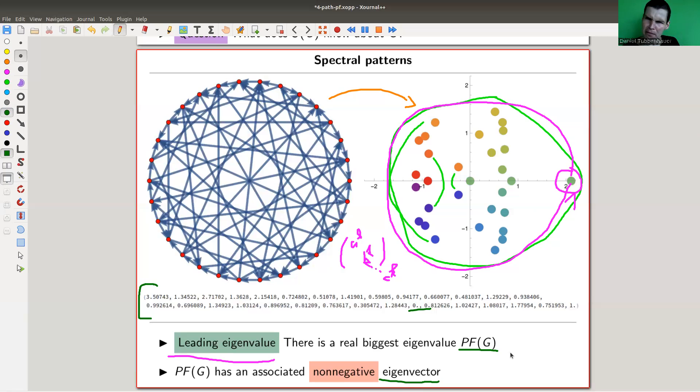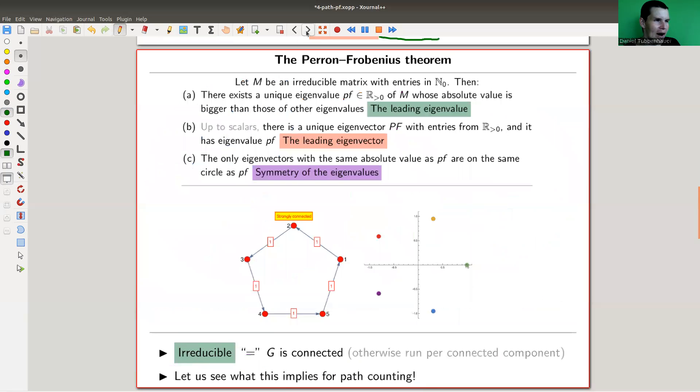And by running whatever your favorite computer algebra program for large graphs, you might end up with the theorem, which is called the Perron-Frobenius theorem. It's one of my all-time favorites. It's just absolutely fantastic.